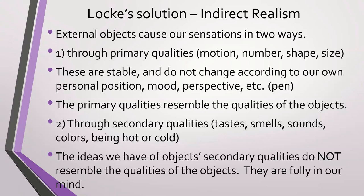So the ideas we have of objects, secondary qualities, do not resemble the qualities of the objects. Objects in the external world don't actually have a flavor or an odor or sound or heat or cold. They have motion. They have number. They have size. They have certain shape. That's it.